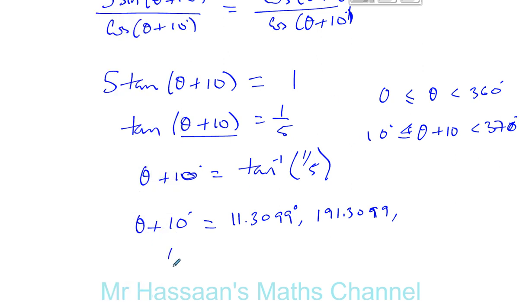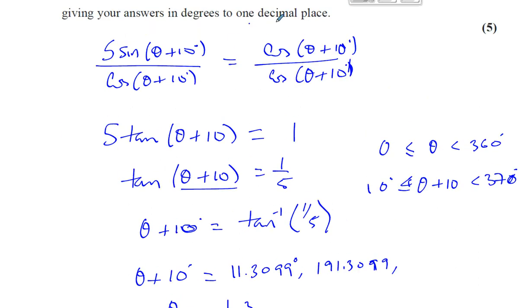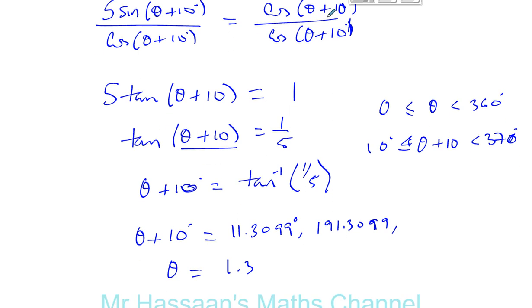Of course, we've got to find theta. So we've got to take away 10 from each of these. This becomes 11.3099 minus 10, which is 1.3. It tells us to find it to one decimal place, so we stop there. 1.3 degrees. And this gives you 191.3 degrees. Sorry, not 191. We've got to take away 10. Theta equals 191.3099, which gives you 181.3099, which is 181.3 degrees.